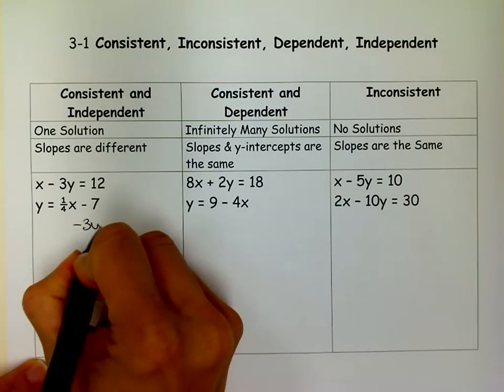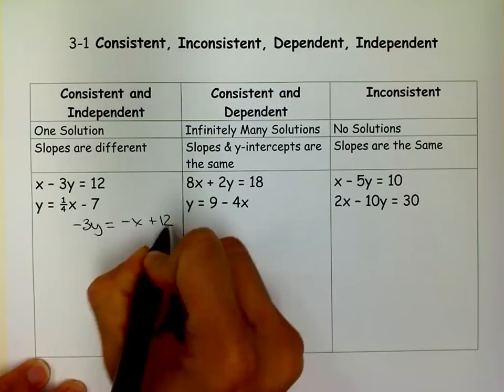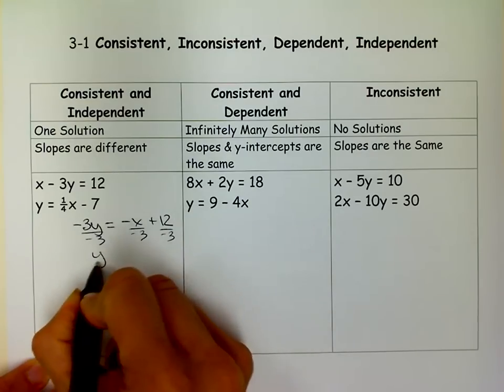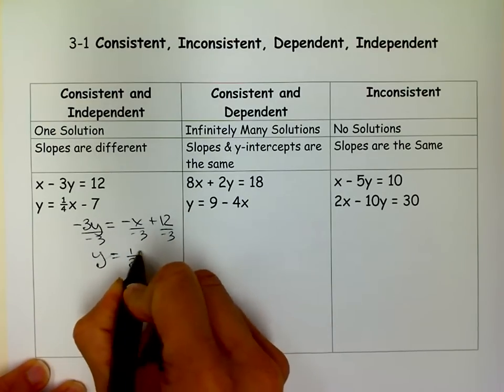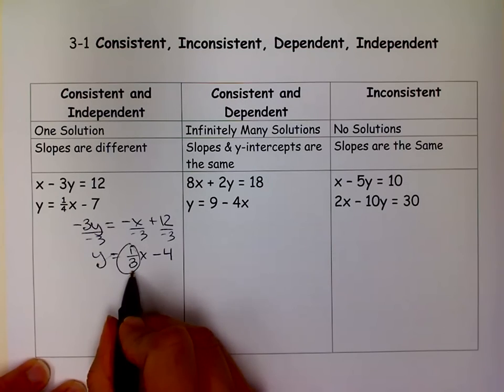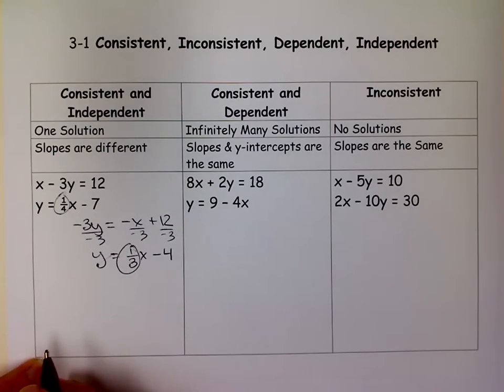I would have added x to both sides. So I would get 3y equals negative x plus 12. I would have divided by negative 3. And once I do that, it's going to be in slope-intercept form. And now I can see that the slope in this equation, this line, is 1 third. The slope in this line is 1 fourth.